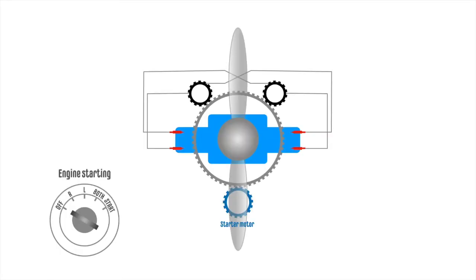Back to the engine now. Impulse coupling is a device that is used to intensify the ignition spark at slow engine speeds to assist with engine starting. It's built into the one magneto and it's designed to provide a short and sudden acceleration of the magneto.